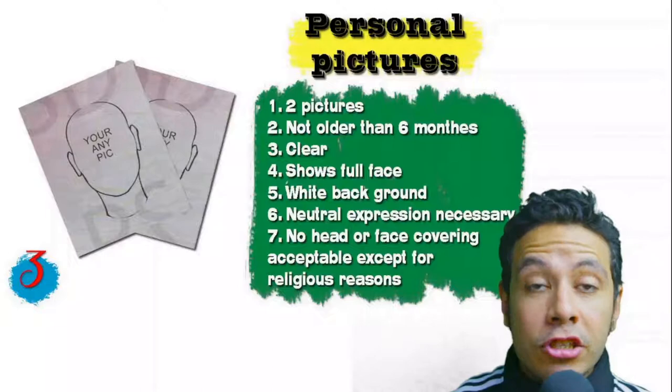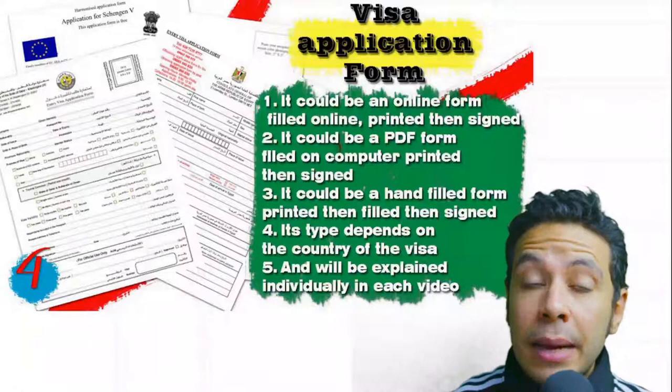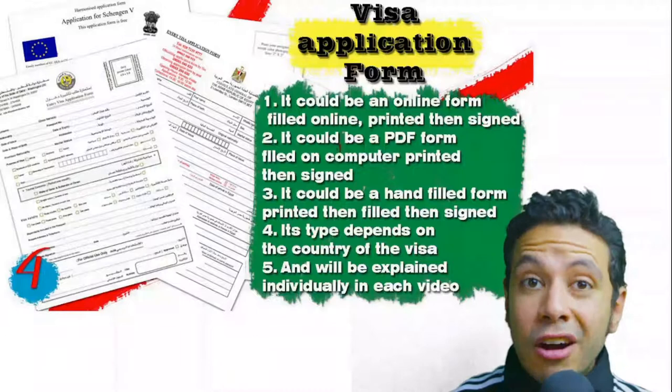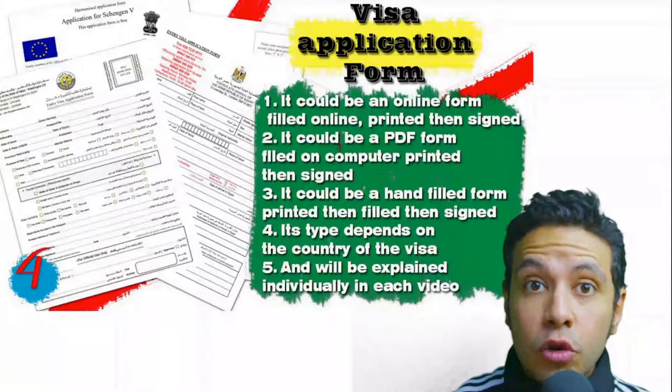For the visa application form, in general you need only one copy, but sometimes two or three copies are required. Visa forms differ from country to country — in general you print it and fill it manually, but many countries now provide the form on an online platform where you can fill it online, then print and sign it. Fill it as demonstrated in this video.